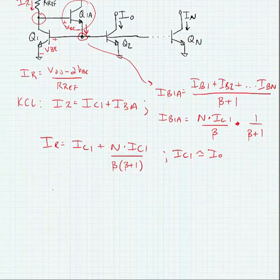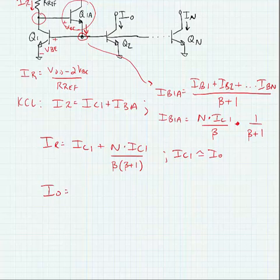Now if we simplify this whole expression we get I out is equal to IREF divided by one plus N divided by beta times beta plus one.